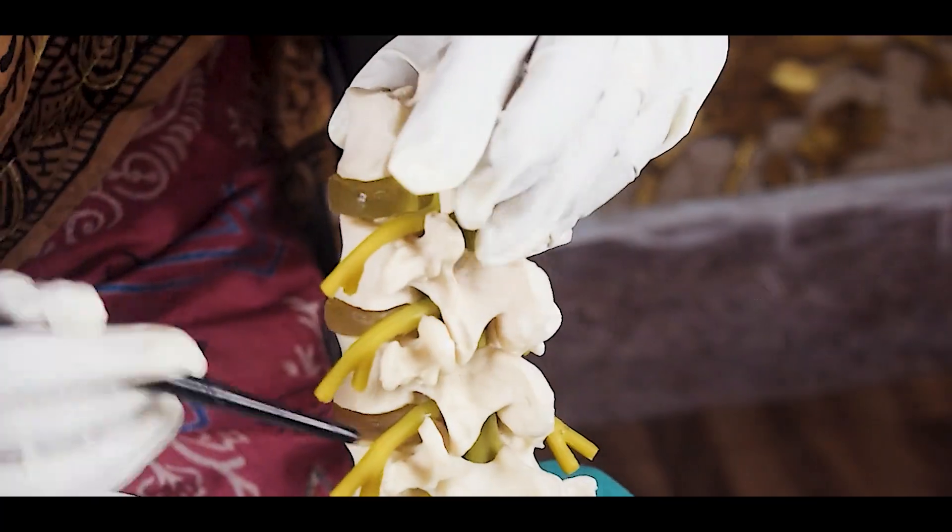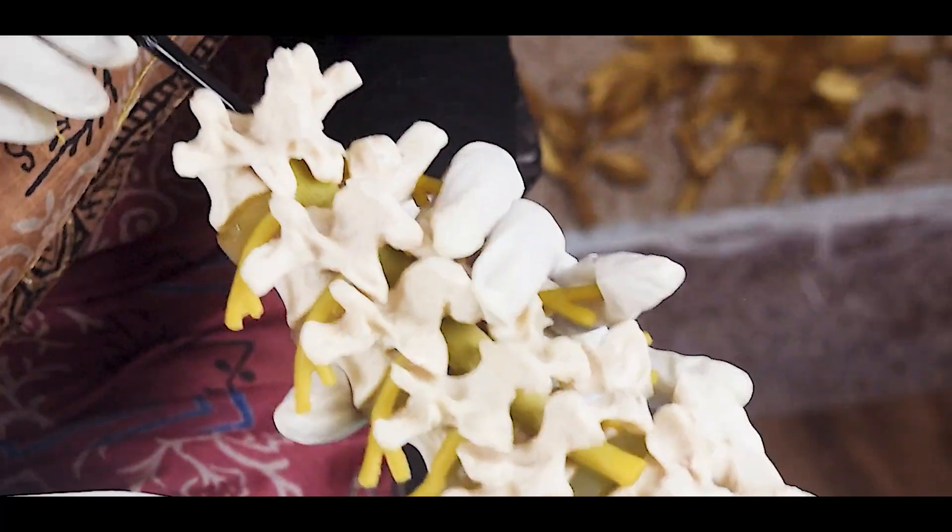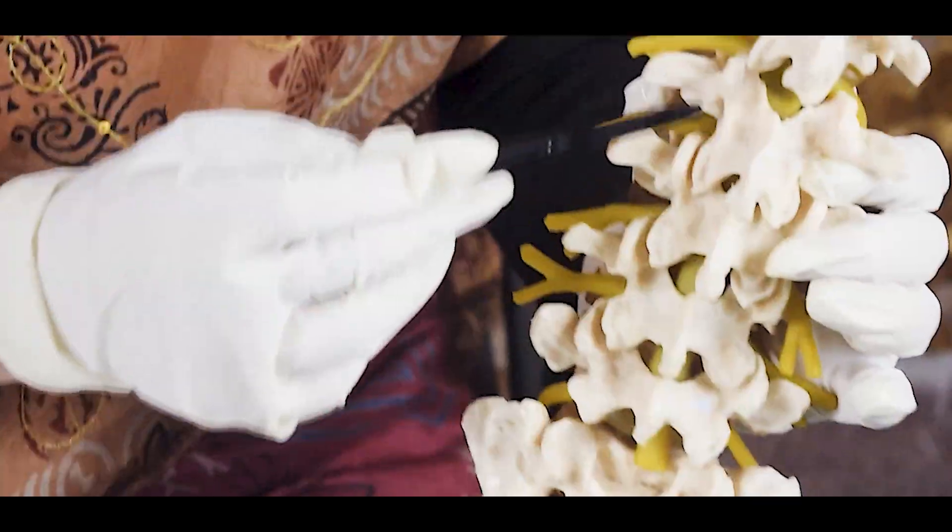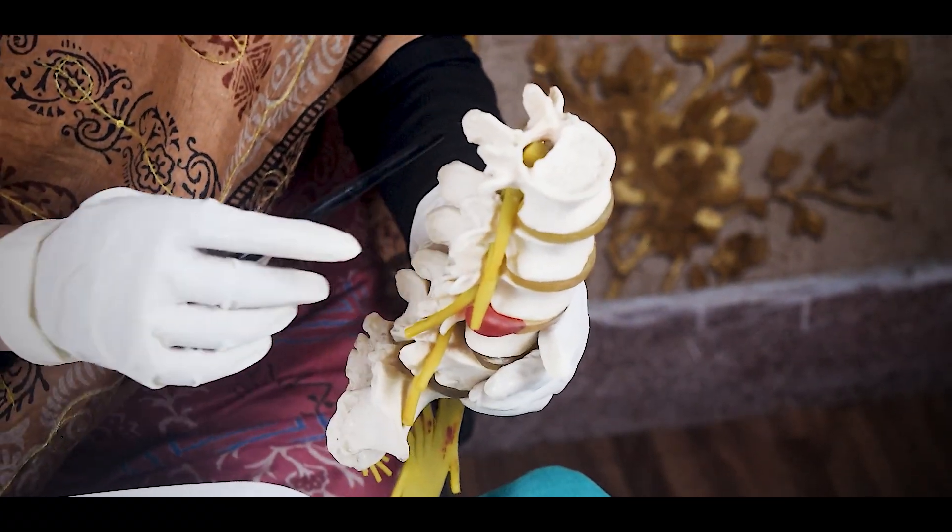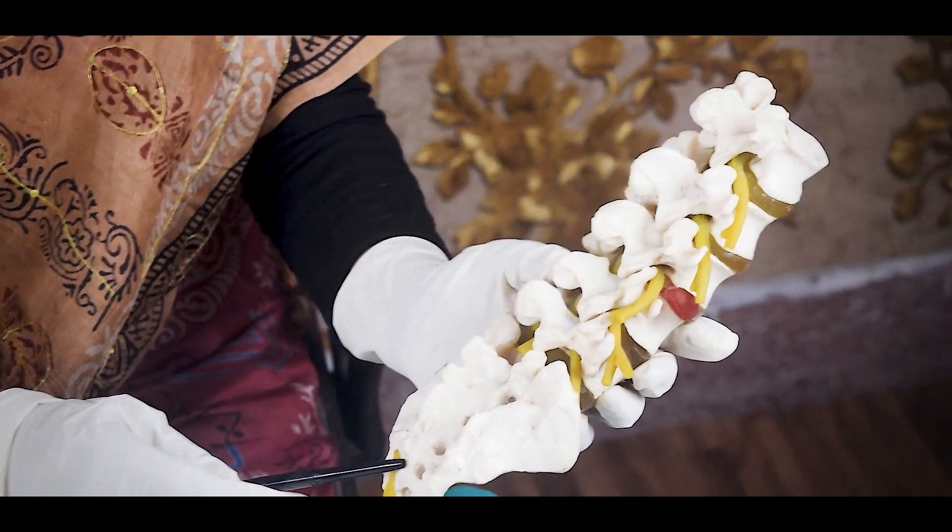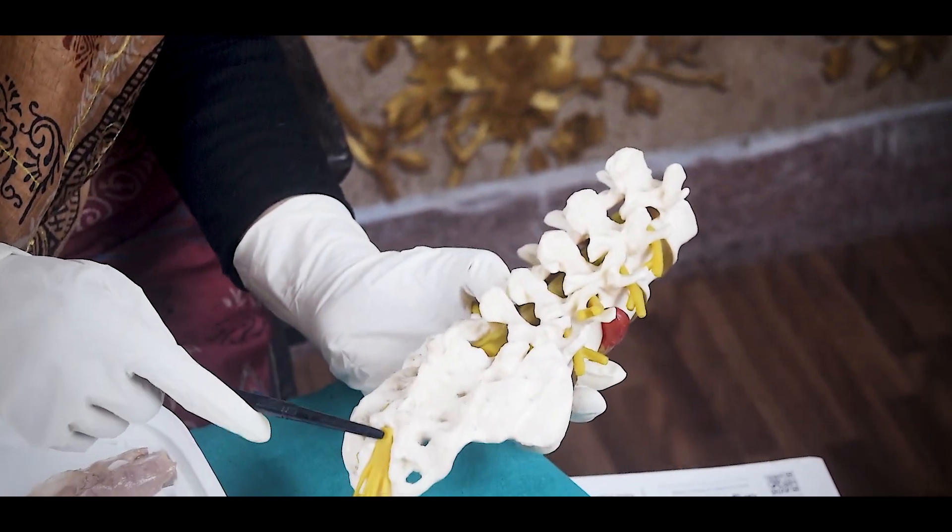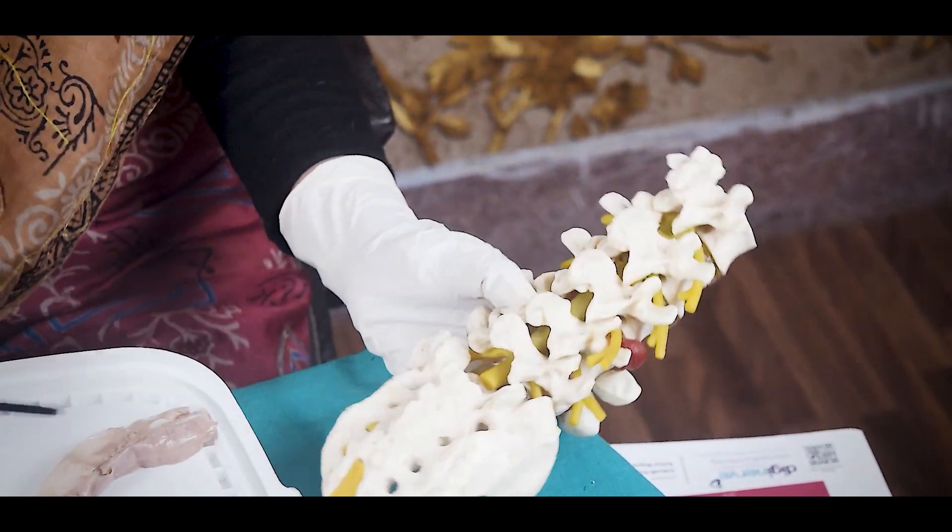You will see, so this is the vertebral canal into which this spinal cord is situated. This is the model of the lumbar vertebrae, sacrum, and you can see here how the cauda equina looks like.